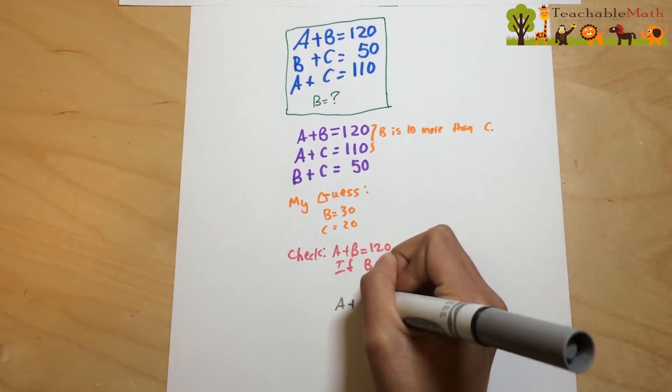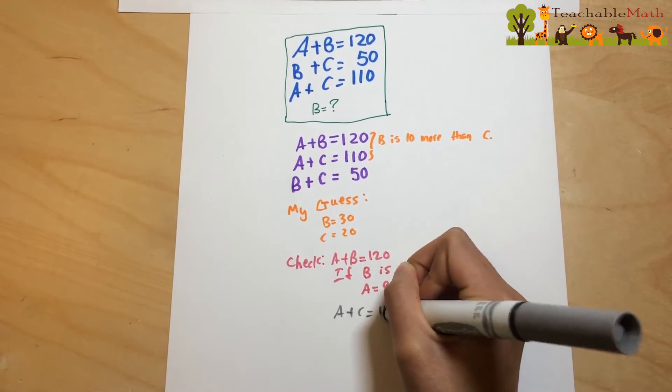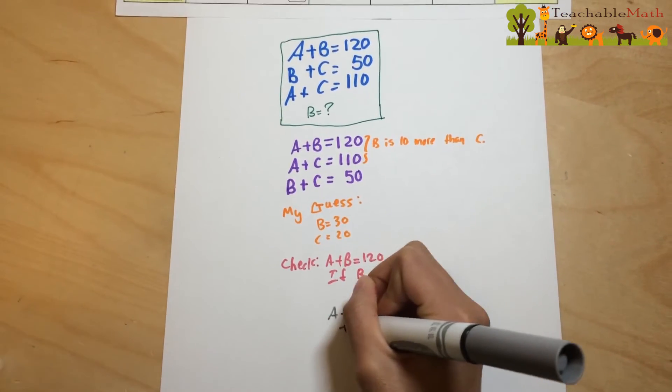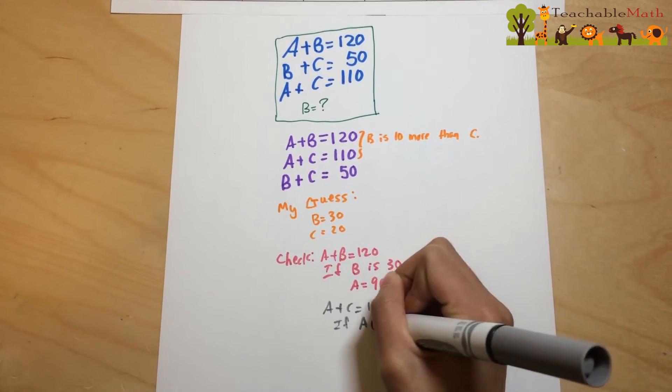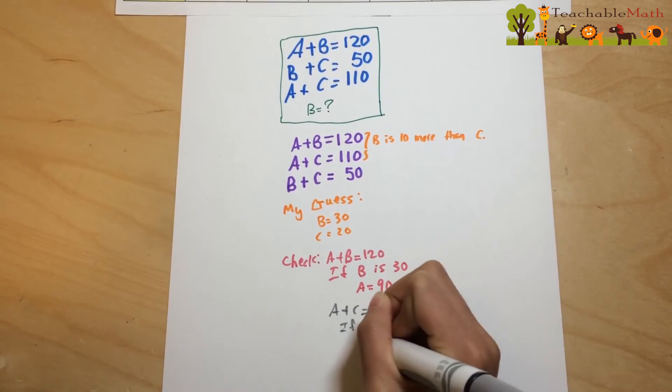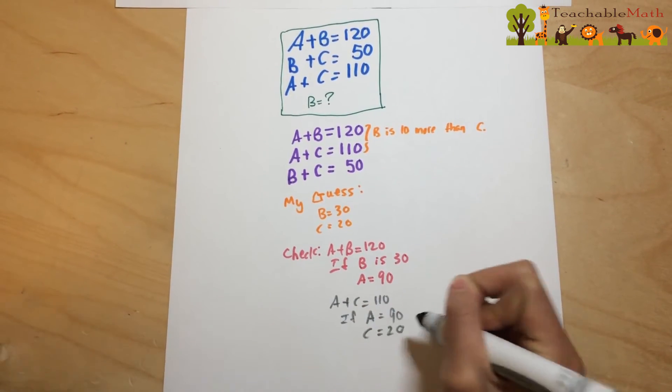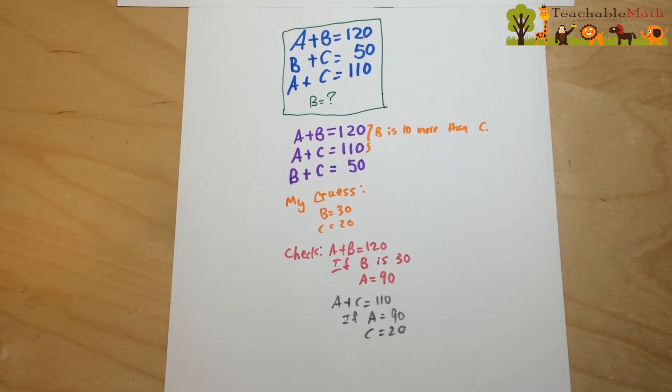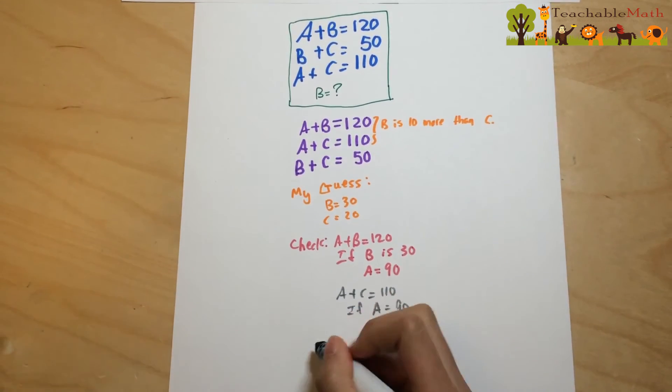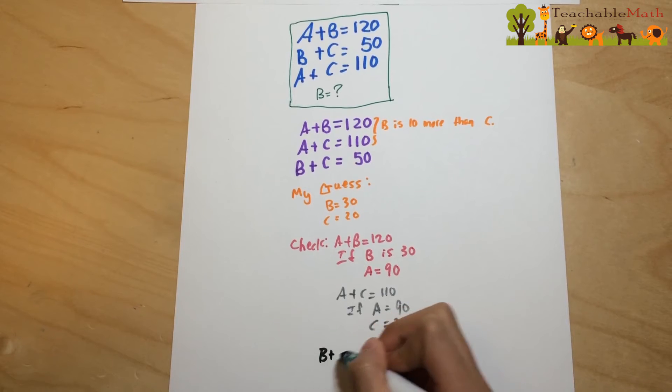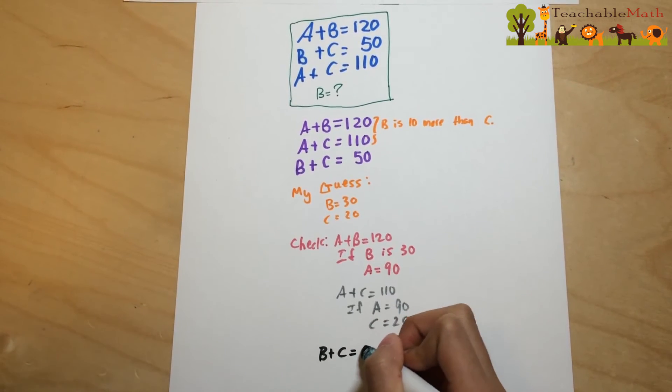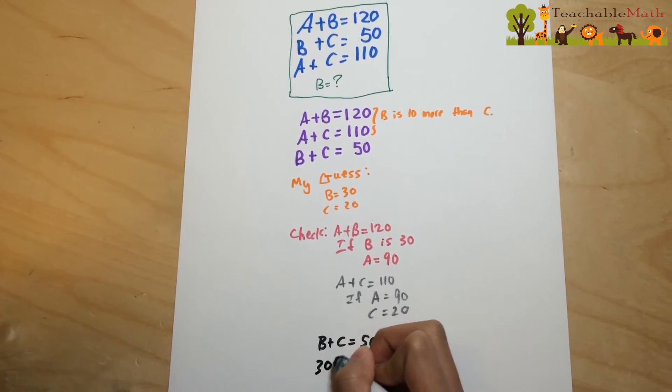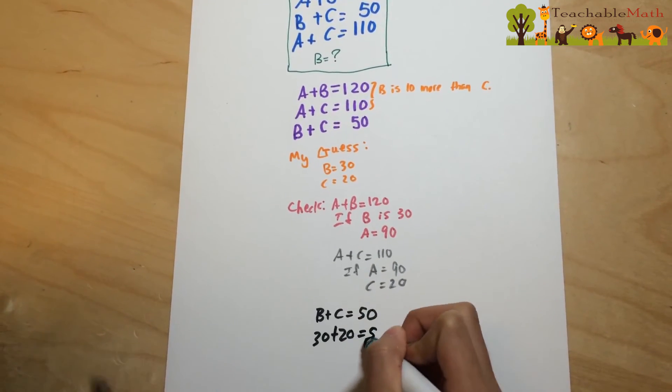A plus C equals 110. If A equals 90, C equals 20. B plus C equals 50. 30 plus 20 equals 50.